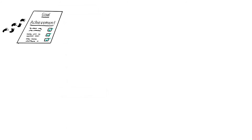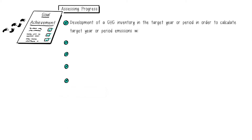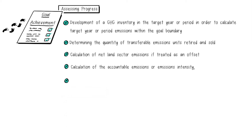The steps for assessing goal achievement have been explored in the Assessing Progress section and include: the development of a GHG inventory in the target year or period in order to calculate target year or period emissions within the goal boundary; determining the quantity of transferable emissions units retired and sold; calculation of net land sector emissions, if treated as an offset; and calculation of the accountable emissions or emissions intensity, depending on the goal type.